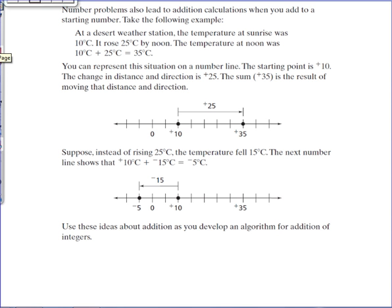Number problems also lead to addition calculations when you add to a starting number. Take the following example. At a desert weather station, the temperature at sunrise was 10 degrees Celsius. It rose 25 degrees Celsius by noon.